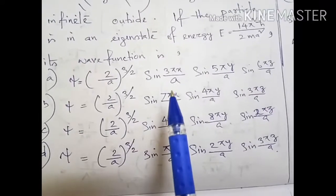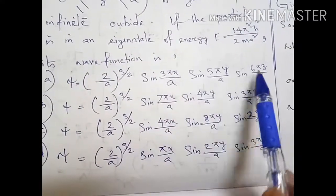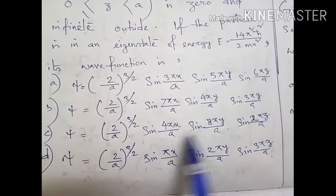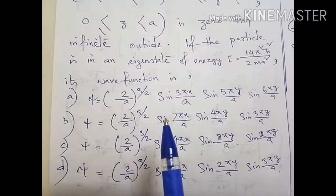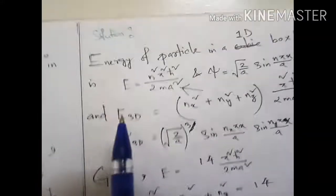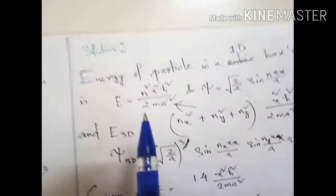These are the options. There are certain combinations like 3-5-6 here, 7-4-3, 4-8-2, and 1-2-3. So let's move to the solution.